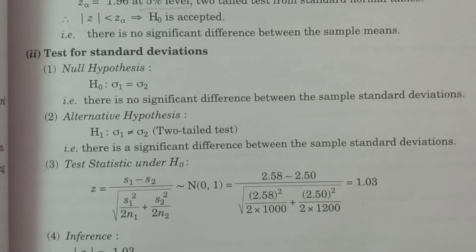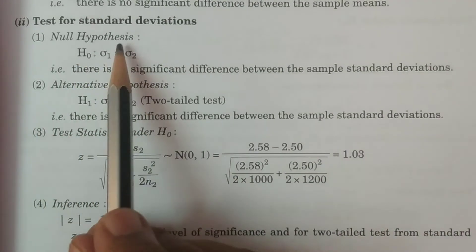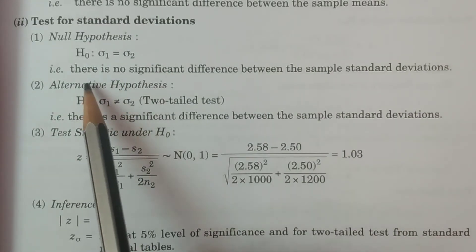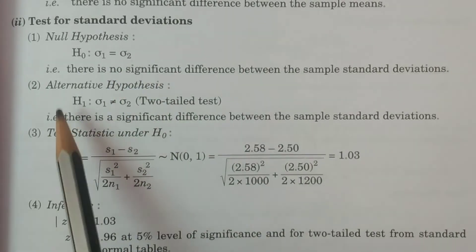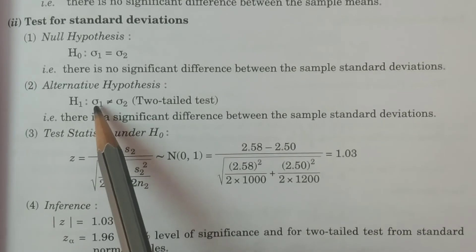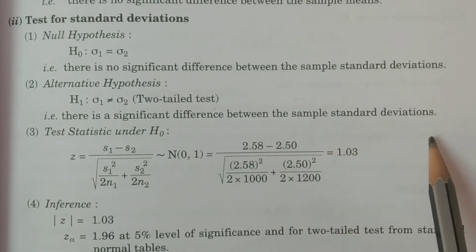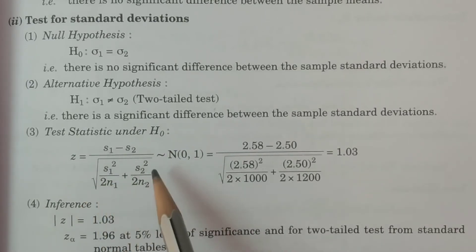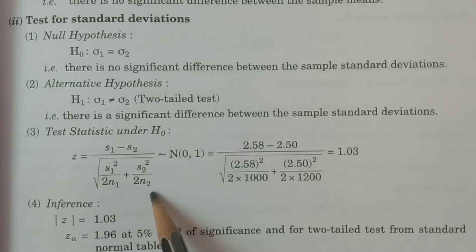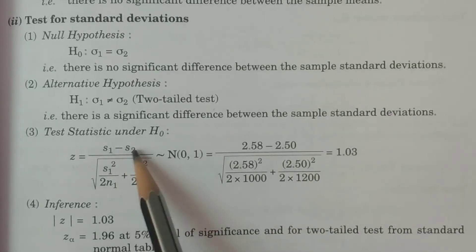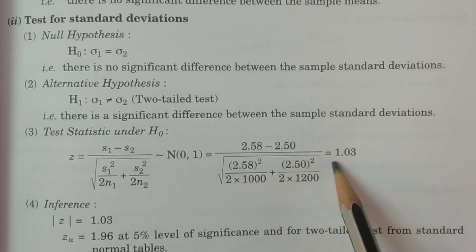Now, test for standard deviations. Point 1, null hypothesis H0: sigma 1 = sigma 2 — there is no significant difference between the sample standard deviations. Alternative hypothesis H1: sigma 1 ≠ sigma 2 (two-tailed test) — there is a significant difference between the sample standard deviations. Point 3, test statistic under H0 (Case 2, sigma 1 and sigma 2 not known): Z = (S1 − S2) / sqrt(S1² / 2N1 + S2² / 2N2). Substituting all values, the calculated value is Z = 1.03.